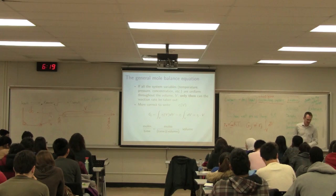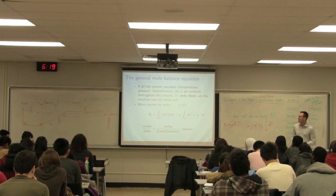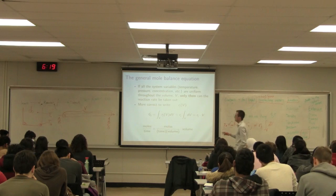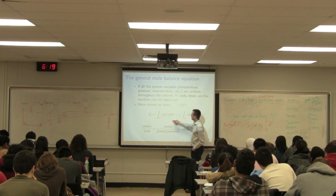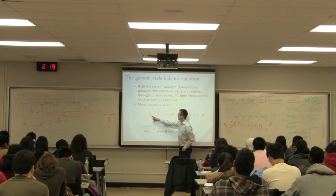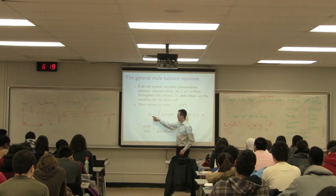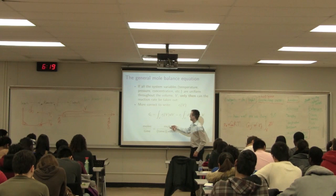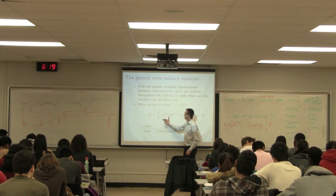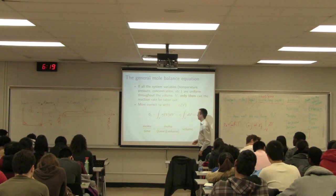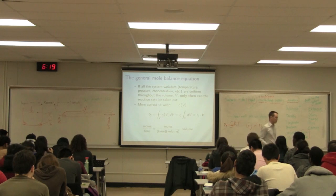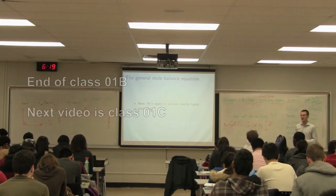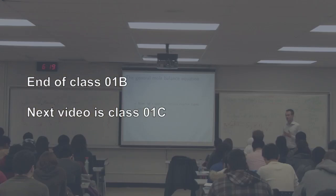Those are the key concepts from this evening's class. We use the general generation equation: G_J — the total material created — is the integral of r_J over the volume. We'll substitute that into the general mole balance and look at various reactor types in tomorrow's class.